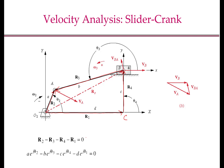We have also seen that r2 can be written as a e to the power of j theta 2, r3 as b e to the power of j theta 3, r4 as c e to the power of j theta 4, and r1 as d e to the power of j theta 1. Now since this loop closure equation has to be valid for all values of theta 2, theta 3, theta 4 as the mechanism moves, the time derivative of this expression will also be identically zero.